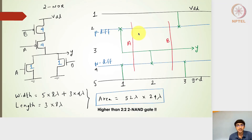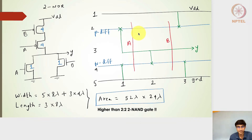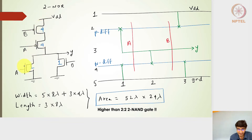Welcome to this lecture on the stick diagram. In this lecture we will look at the two-input NOR gate and then one more additional combinational logic gate, and try to draw the stick diagram for the same. The two-input NOR gate schematic has two PMOS transistors in series and two NMOS transistors in parallel. The width of the PMOS is 4, and the NMOS transistors are 1 and 1.